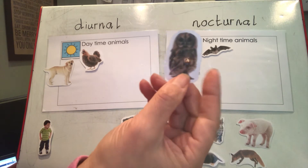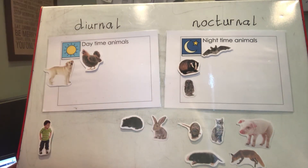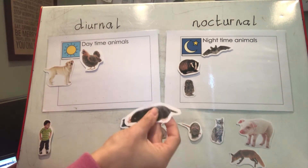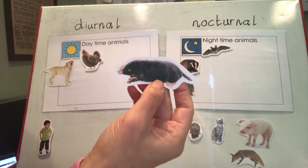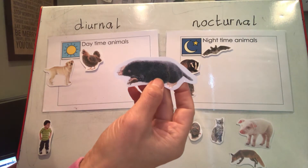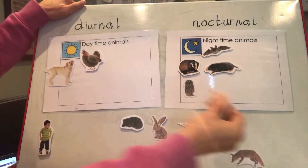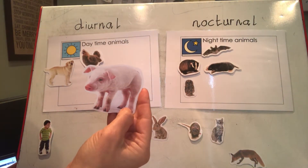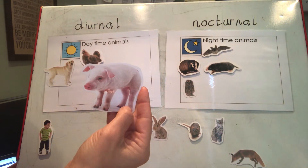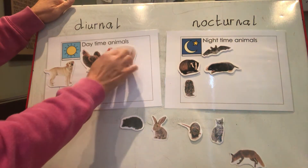What about a little mole? They dig tunnels — do they come out in the daytime or nighttime? They are also nocturnal. Now let's do this little pink pig — does a pig come out in the day or at night? A pig is out in the day — it's diurnal.